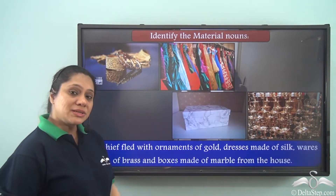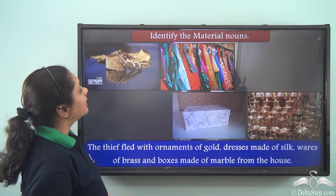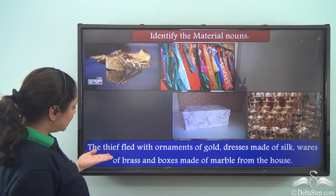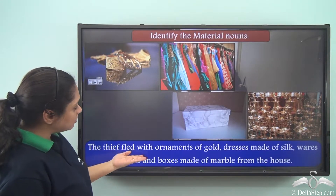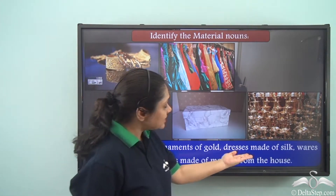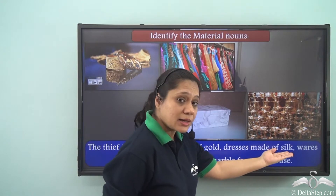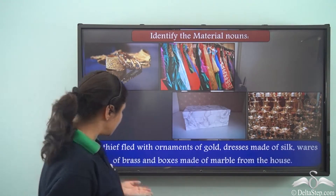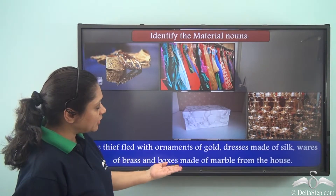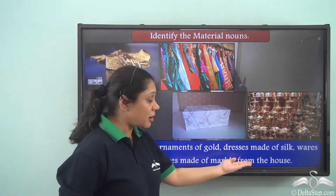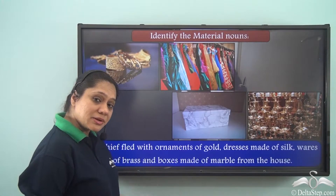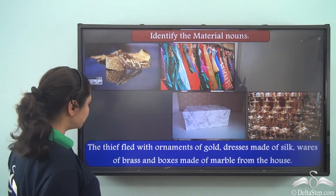Now let us do this exercise: identify the material nouns. The thief fled with ornaments of gold, dresses made of silk, wares of brass, and boxes made of marble from the house.